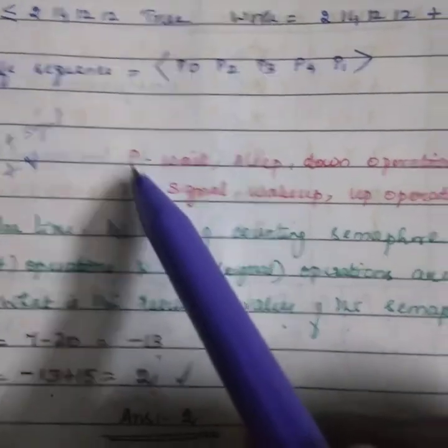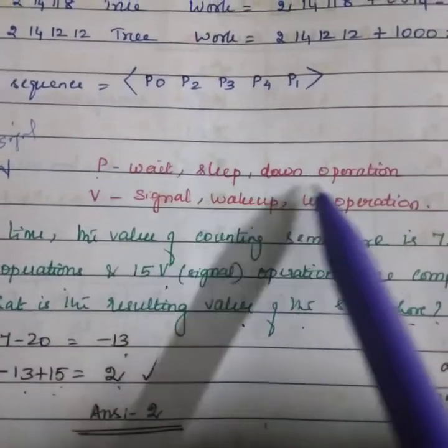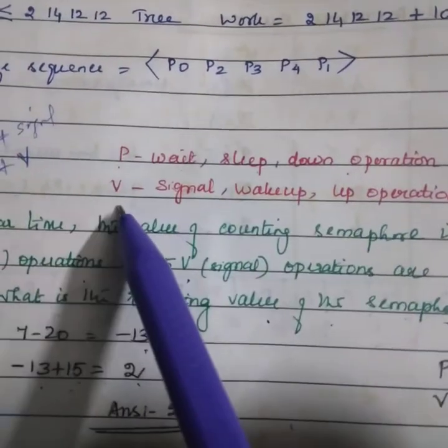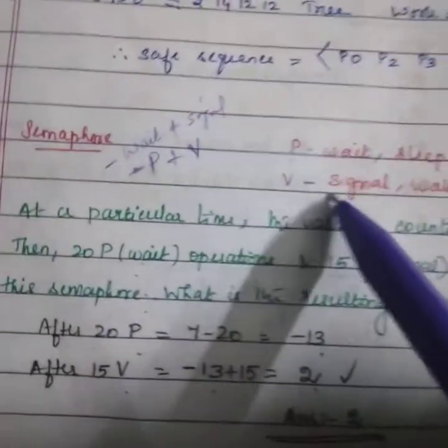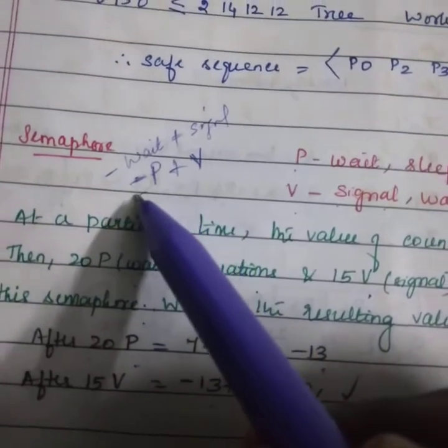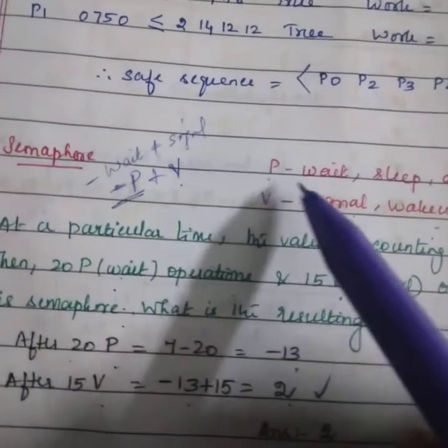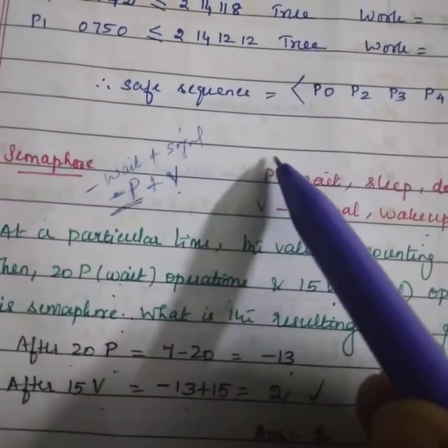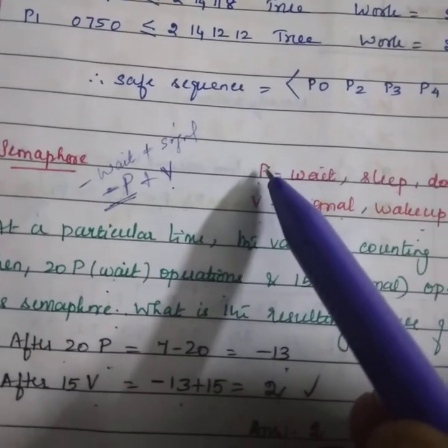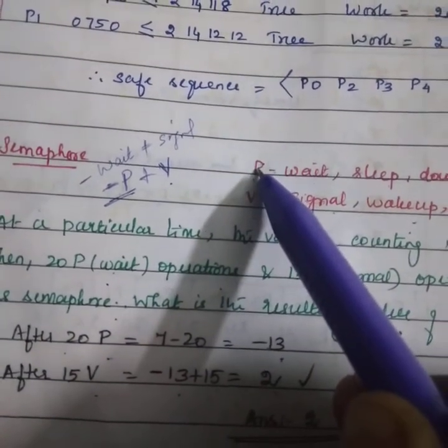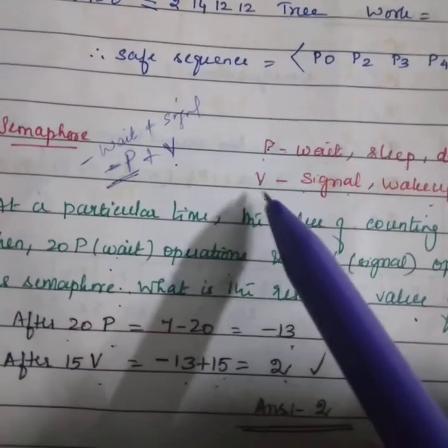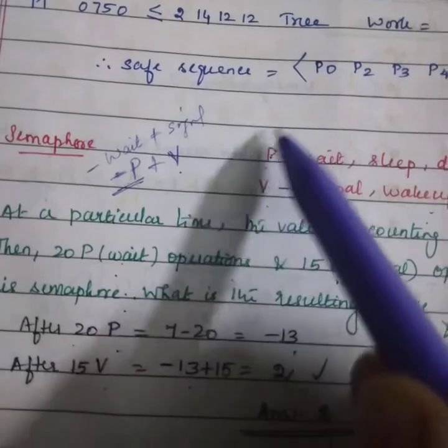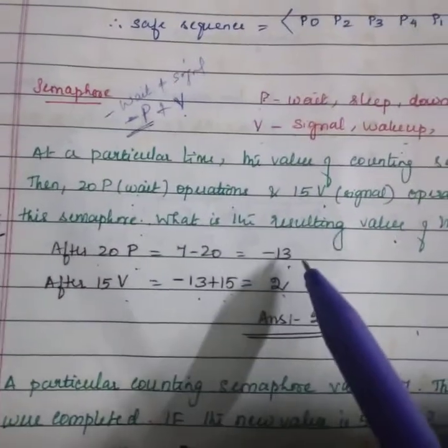P is nothing but wait, sleep, or down operation, and V stands for signal, wake up, or up operation. Always remember: minus P plus V. When P comes, you put decrement or minus sign. V means put plus positive sign. We need to add V minus P.